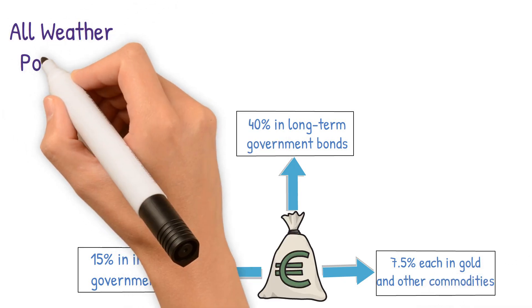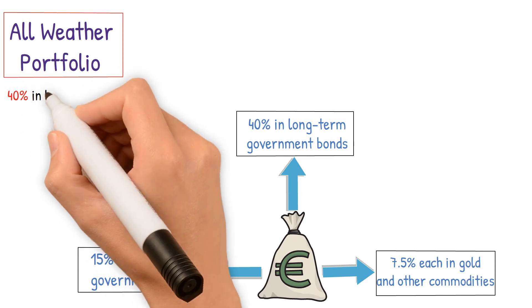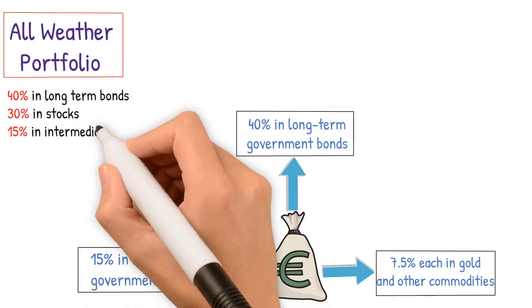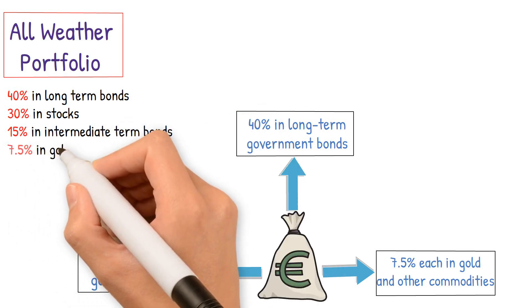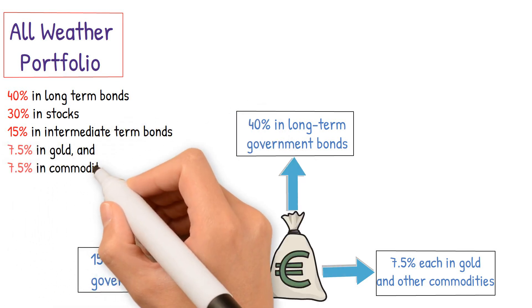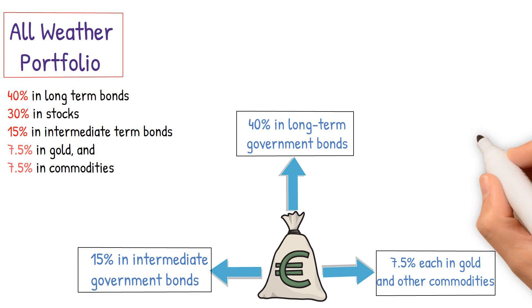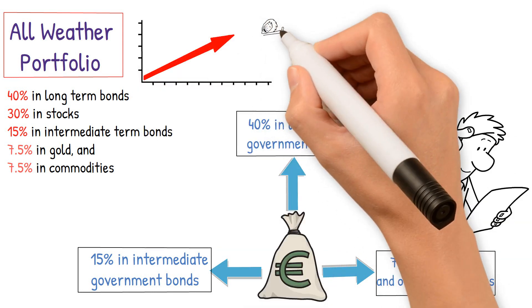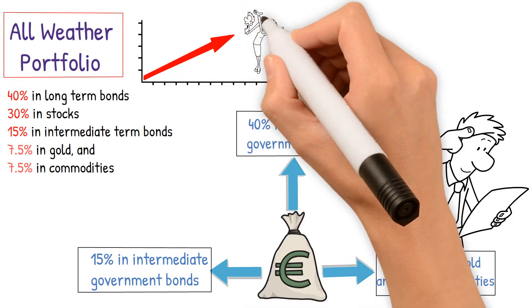Tony champions the all-weather portfolio, a portfolio with 40% in long-term bonds, 30% in stocks, 15% in intermediate-term bonds, 7.5% in gold, and 7.5% in commodities, viewing it as a dual-purpose strategy, one that fosters growth and simultaneously mitigates ill-advised decisions that could jeopardize your financial stability.